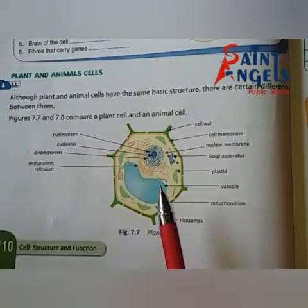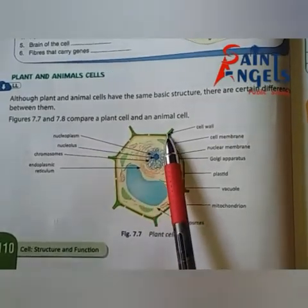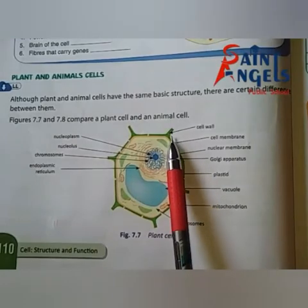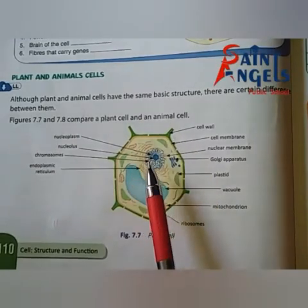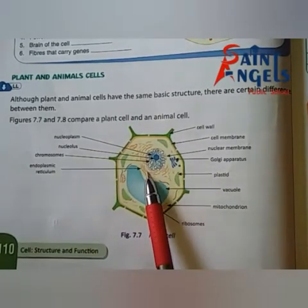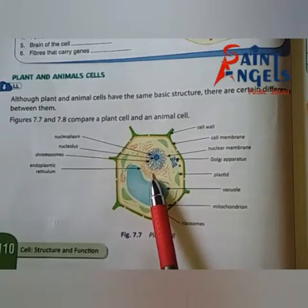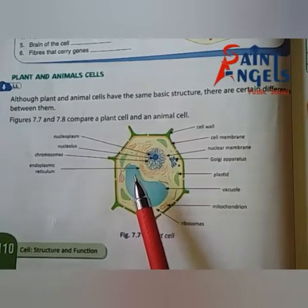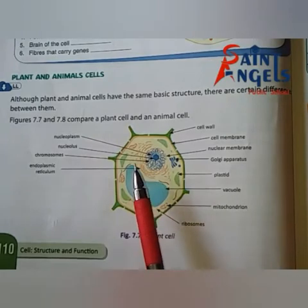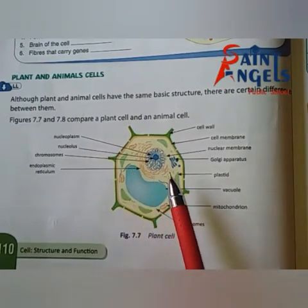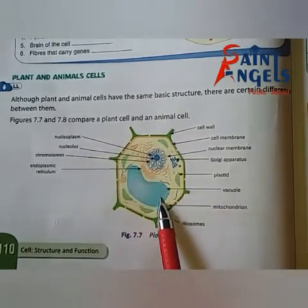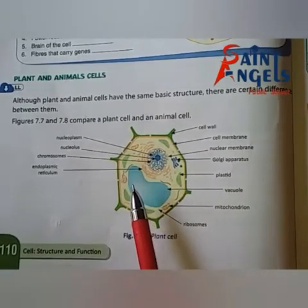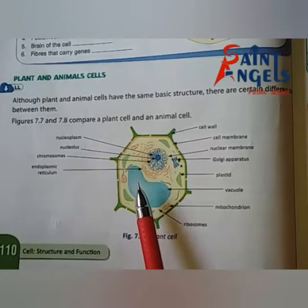Let's study the plant cell first. In a plant cell, a cell wall is present — it is found only in plant cells, not in animal cells. Cytoplasm is not as abundant in plant cells. A large vacuole is present in plant cells, whereas in animal cells the vacuole is not large.